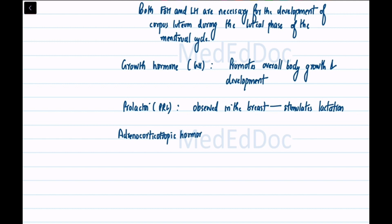Adrenocorticotropic hormone (ACTH) controls the release of cortisol from the adrenal cortex and also plays a role in skin pigmentation.